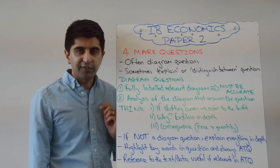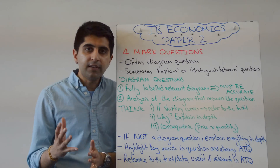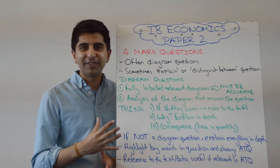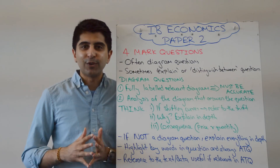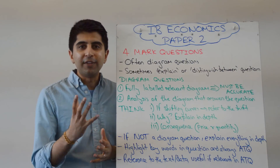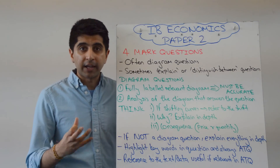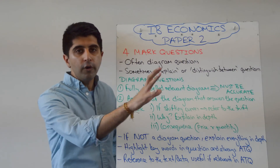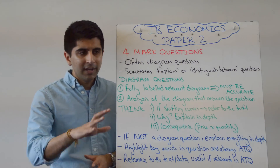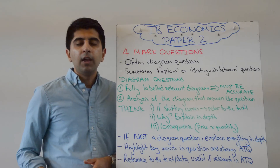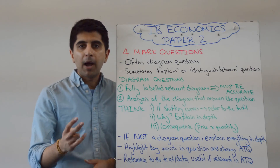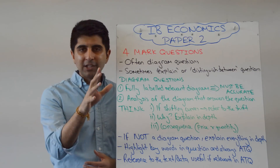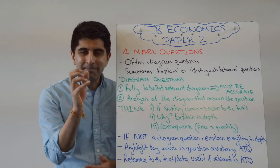Let's look at diagram questions first. I think these are really simple — IB love their diagrams, so these questions are great for you. You would have nailed your diagrams in revision, so I think these are scoring questions. Four markers are marked in levels, in bands. You have band one and band two, and your job is to get to band two.